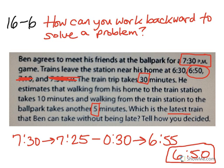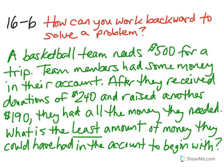So this is one example of working backward to solve a problem. Let's try another. A basketball team needs $500 for a trip. Team members had some money in their account. After they received donations of $240 and raised another $190, they had all the money they needed. What is the least amount of money they could have had in the account to begin with? Please use the work backwards strategy to solve this problem.